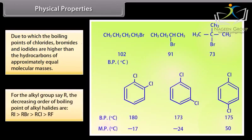For a given alkyl group R, the decreasing order of boiling points of alkyl halides is: RI has the highest boiling point, followed by RBr, then RCl, and then RF.